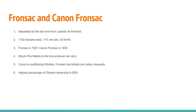Moving west, you'll find Fronsac and Canon-Fronsac, separated by the Isle River. About 1,100 hectares, with similar ABVs and yields, coming on board in the 1930s. A notable producer is Moulin Pey-Labrie — a fantastic producer you can typically find for a really good price. Canon features south-facing hillsides, while Fronsac has hillside and valley vineyards. Oddly enough, this area has the highest percentage of Chinese ownership in all of Bordeaux today.